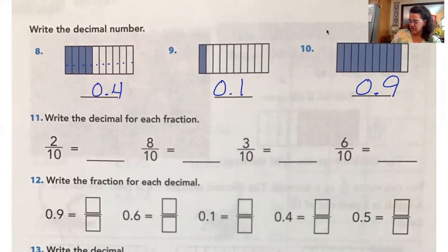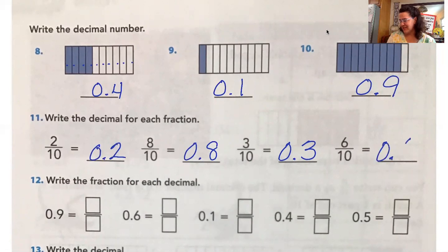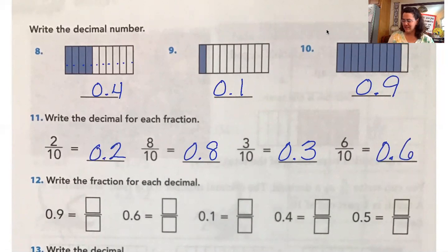All right. Writing the decimal for the fraction. Joshua. 0.2, two tenths. Good. Next one Tessa. 0.8, eight tenths. Next one Mila. 0.3 or three tenths. Next one Jacob. 0.6 or six tenths. Good job.